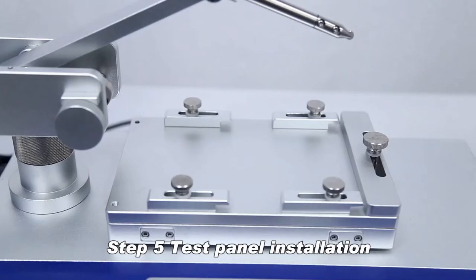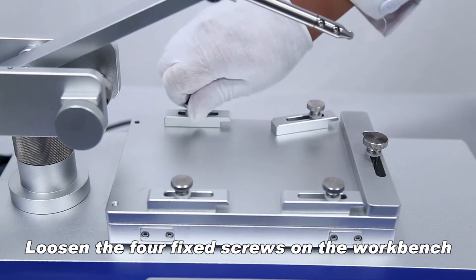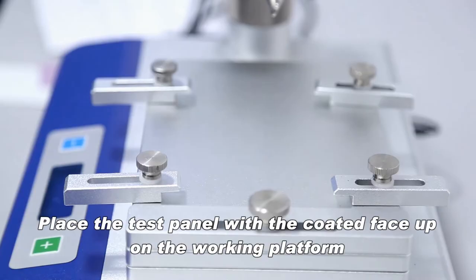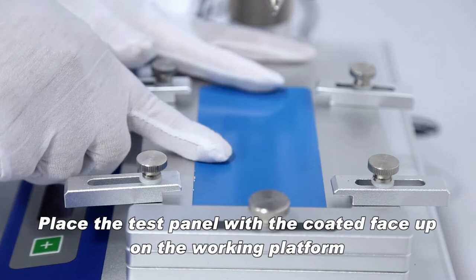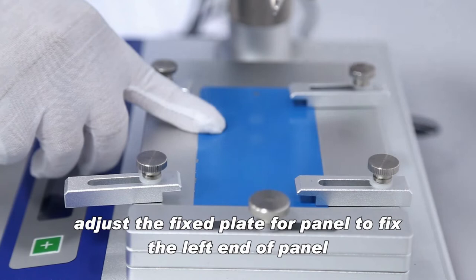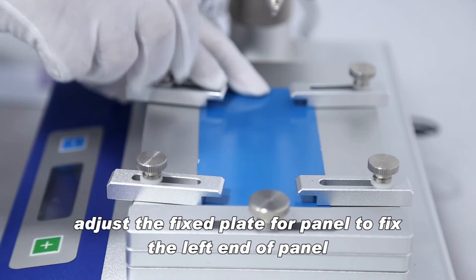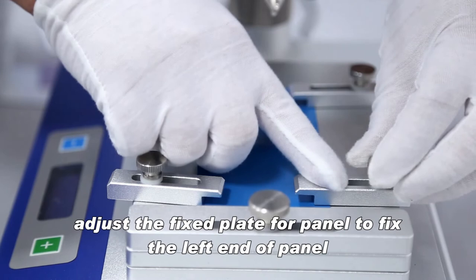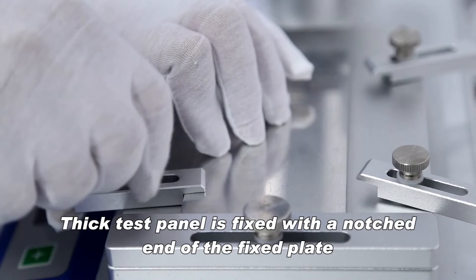Test panel installation: Loosen the four fixed screws on the workbench. Place the test panel with the coated face up on the working platform. The right end of the test panel is pressed against the right edge of the workbench. Adjust the fixed plate for panel to fix the left end of panel. Thick test panel is fixed with a notched end of the fixed plate.